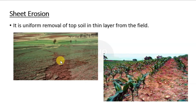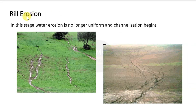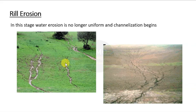You can see in the picture the uniform loss of soil, and the soil surface getting churned due to rain splash. The second stage is rill erosion. When there is continuous rainfall, there is no longer uniform removal of water and channelization begins — channels form and it is more apparent than sheet erosion.